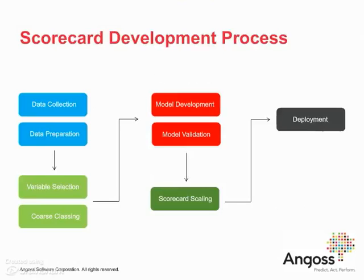We now go into the stages of developing a scorecard. The process is simply a set of logical steps: first, we collect, prepare, and clean the data; then we select variables or attributes to be used in the model. Before building the model, we perform coarse classing and weight-of-evidence transformations. Then we build a model, validate and test it, and finally scale the scorecard and deploy it. We will go into each of these steps in more detail in the following slides and future sections.